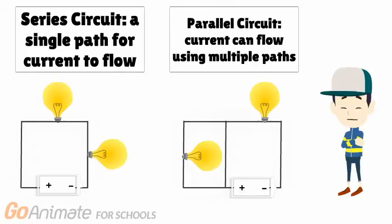Two types of circuits are series and parallel. A series circuit has only a single path for current to flow. If the path is broken, none of the bulbs will light up.